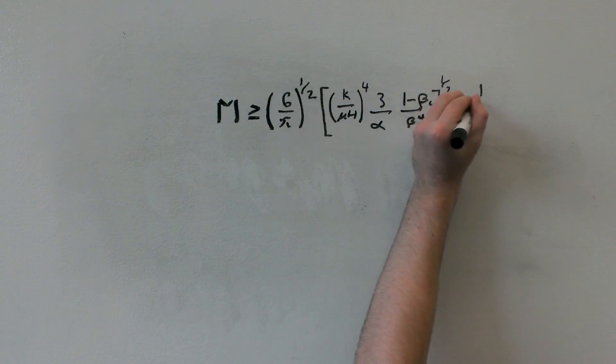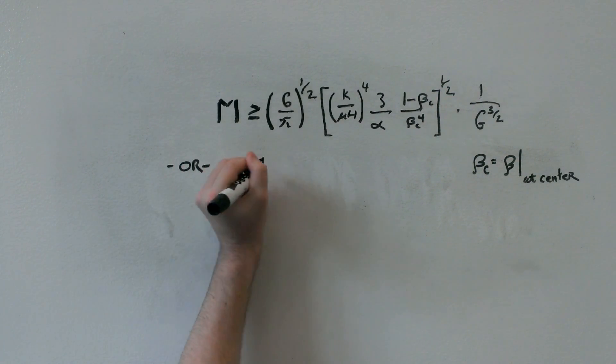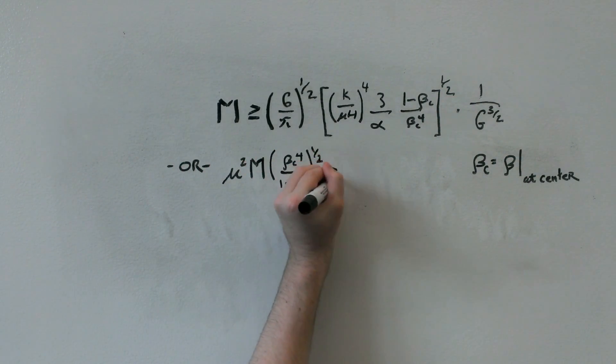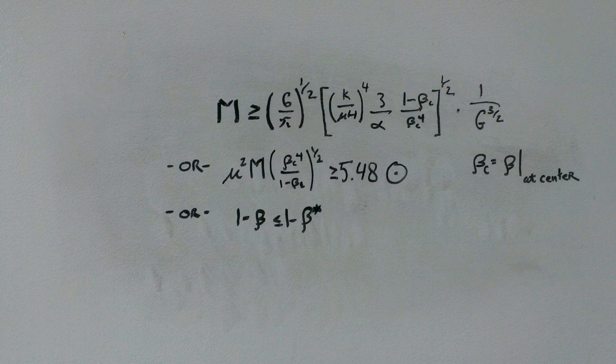By examining this inequality in respect to previous results, we find this relation between mass and beta. Further, numeric and general simplification leads to this relation, or that 1-beta is less than or equal to 1-beta star.